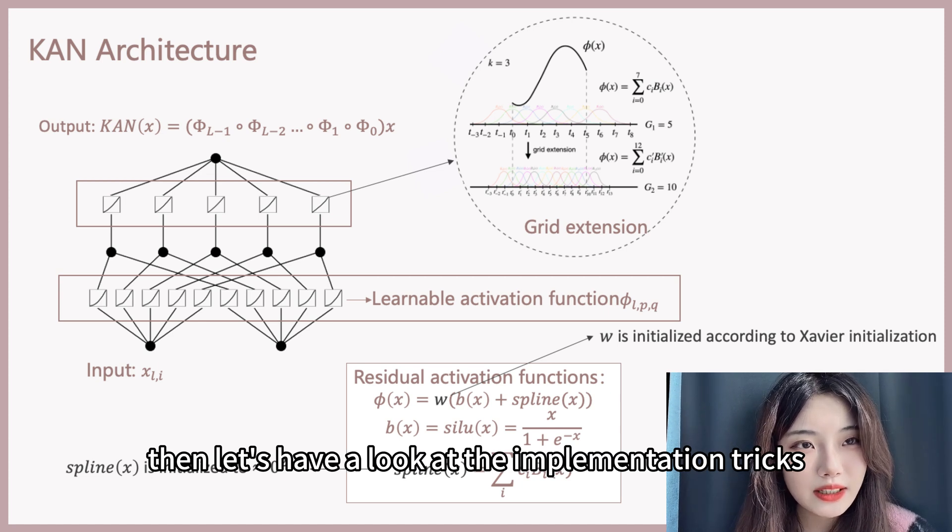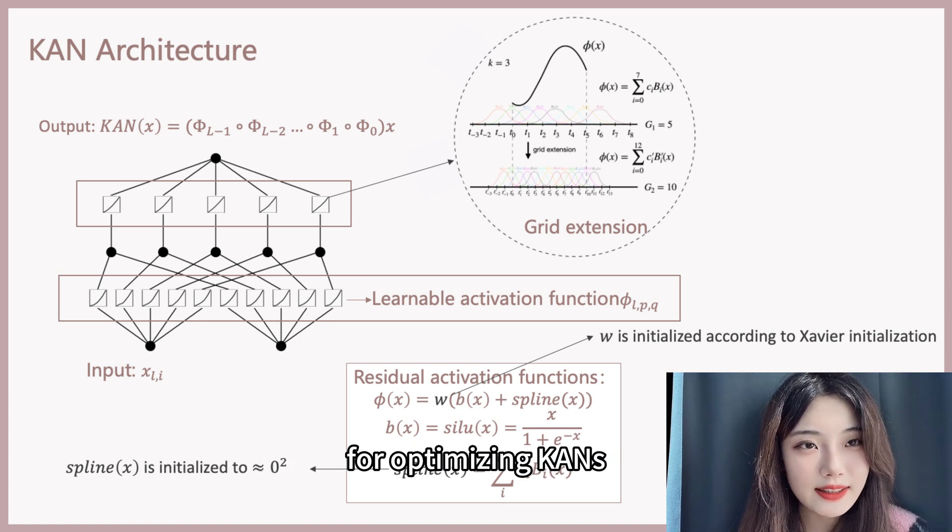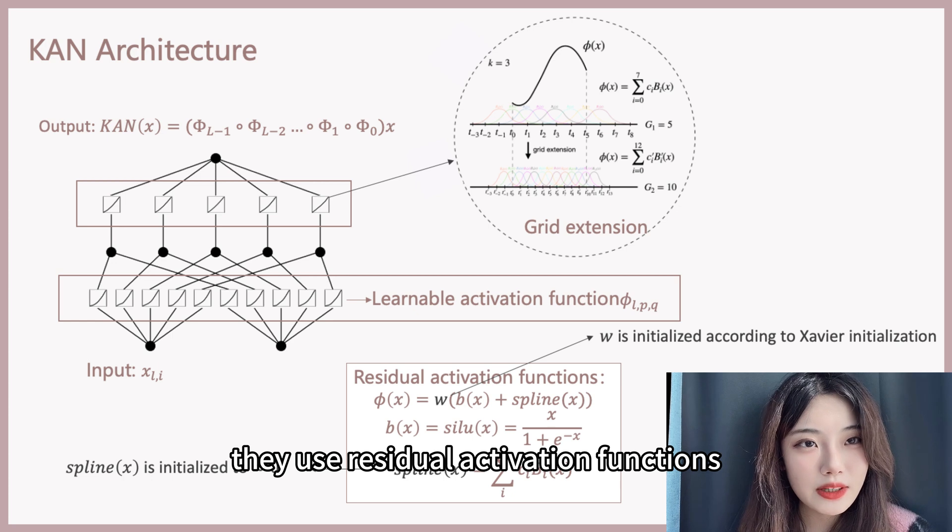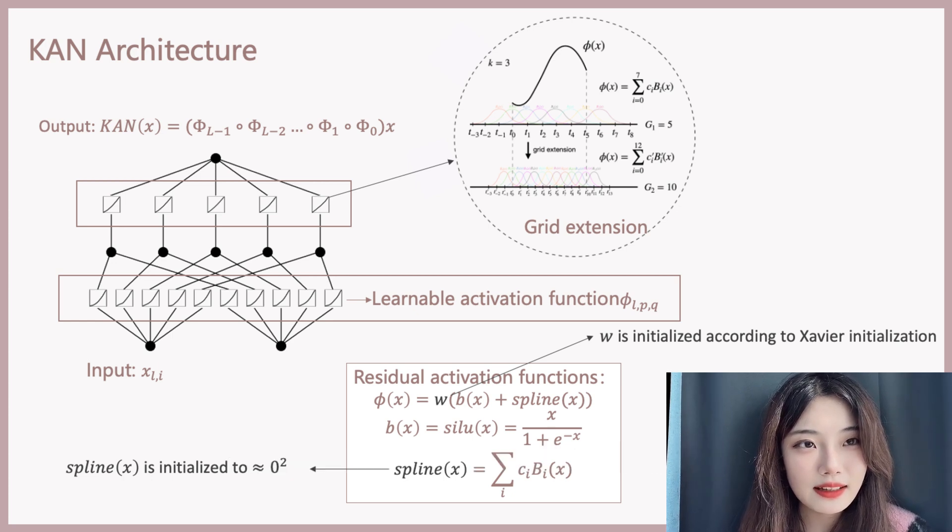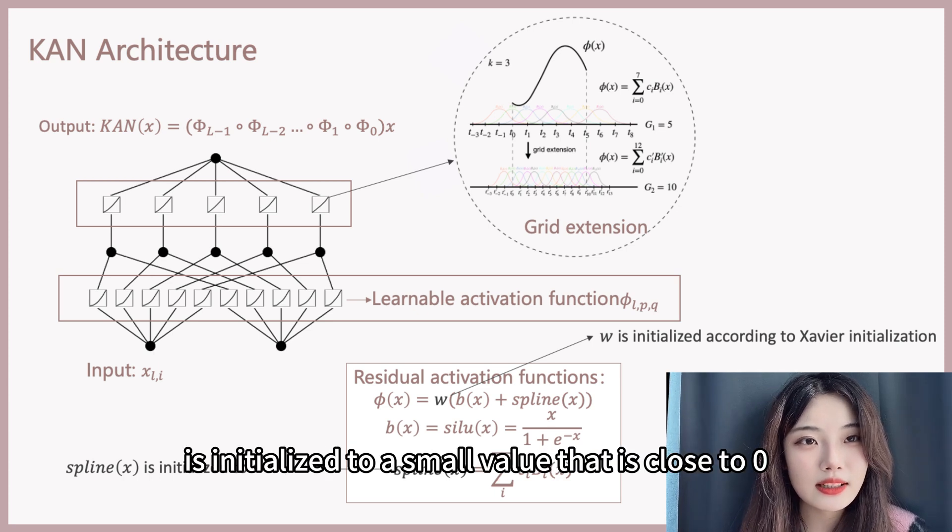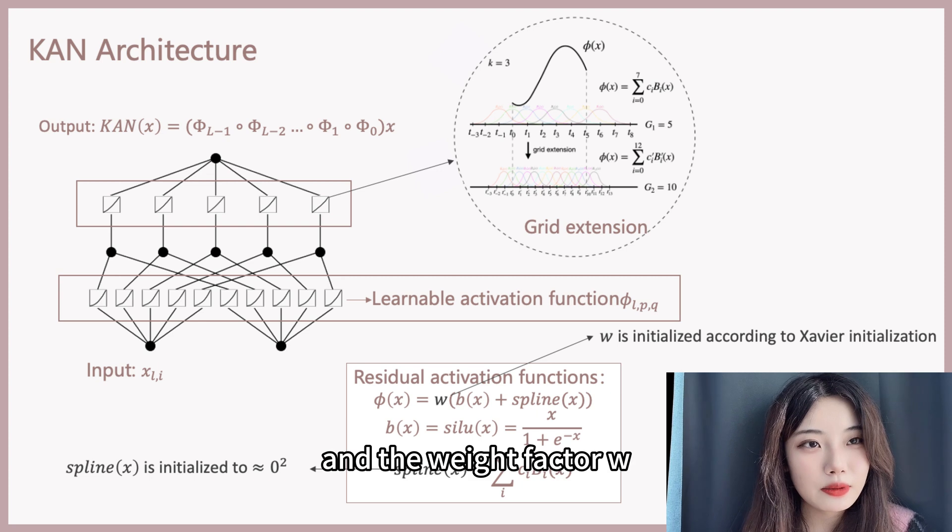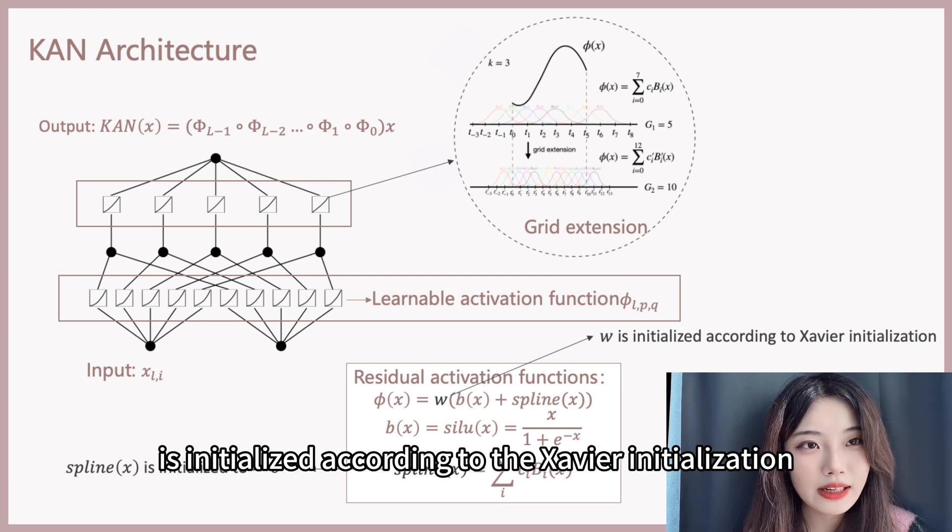Then, let's have a look at the implementation tricks for optimizing KAN. They use residual activation functions that are a sum of a basis function b(x) and a learnable spline function. The spline function is initialized to a small value that is close to 0, and the weight factor w is initialized according to the Xavier initialization, just like MLPs.